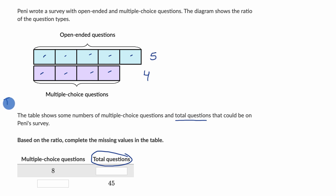So let's think, if we were to create another bar for total questions that showed the ratio, for every five open-ended questions, you'll have four multiple choice questions, and you would have nine total questions. So it would look like this.